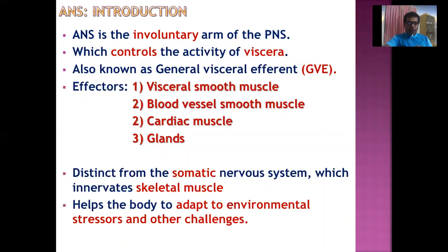The Autonomic Nervous System helps the body adapt to environmental stressors and other challenges. Simply put, the ANS helps the body maintain physiological equilibrium during various environmental challenges or stressful situations.